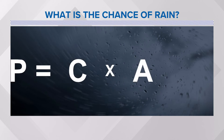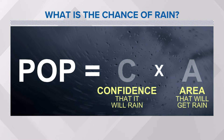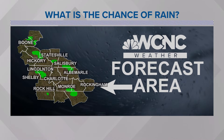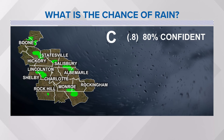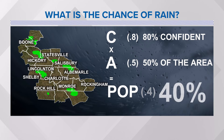So how do we calculate this? Very simply, you take the confidence in the forecast and multiply it by the area we expect to see rain — so C times A. You have to know the area first; this is our forecast area. For apps, you don't always know this, and this is why apps can be very problematic. A simple calculation would be: I'm 80% confident that half of the area is going to see rain — that equals a 40% chance of rain.